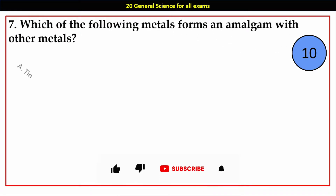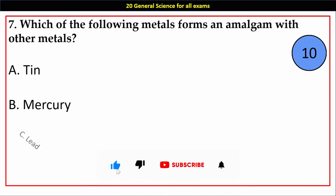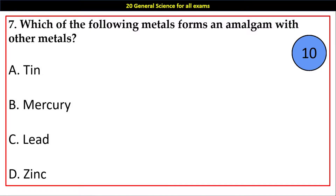Question number 7. Which of the following metals forms an amalgam with other metals? Options A. Tin, B. Mercury, C. Lead, D. Zinc. Answer: B. Mercury.